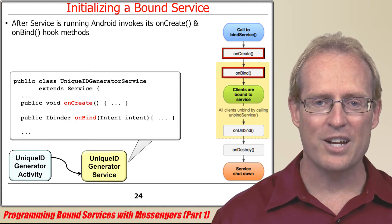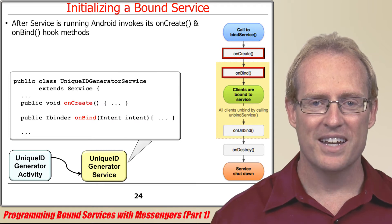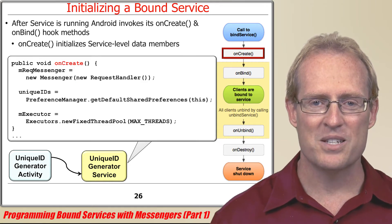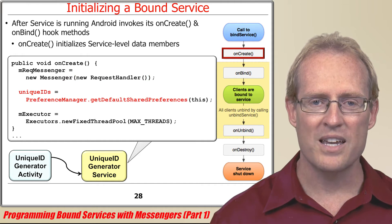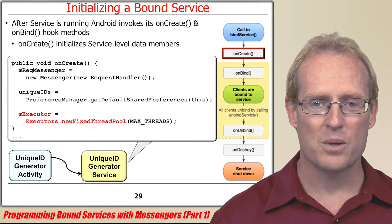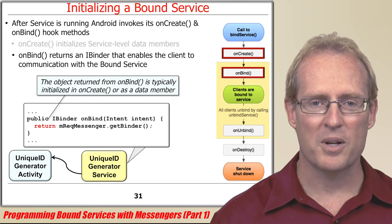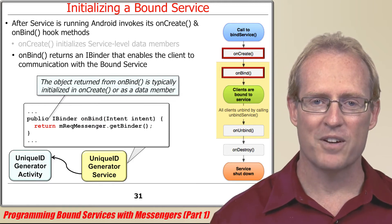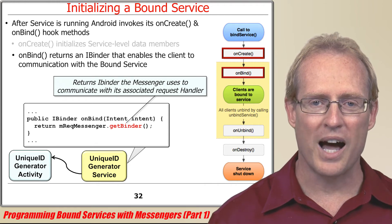After the service is up and running, Android's service framework invokes the onCreate and onBind hook methods to perform initialization activities, inherited from the service superclass. The unique ID generator service's onCreate method initializes its data members, such as the messenger that handles requests for unique IDs, an object that stores these IDs persistently, and an executor that manages a pool of threads used to process client requests concurrently. Likewise, onBind returns an iBinder object that enables the client to communicate with the bound service, typically initialized in onCreate or in a data member definition. The unique ID generator service's onBind factory method calls getBinder to return the iBinder its request messenger uses to communicate with its associated request handler.